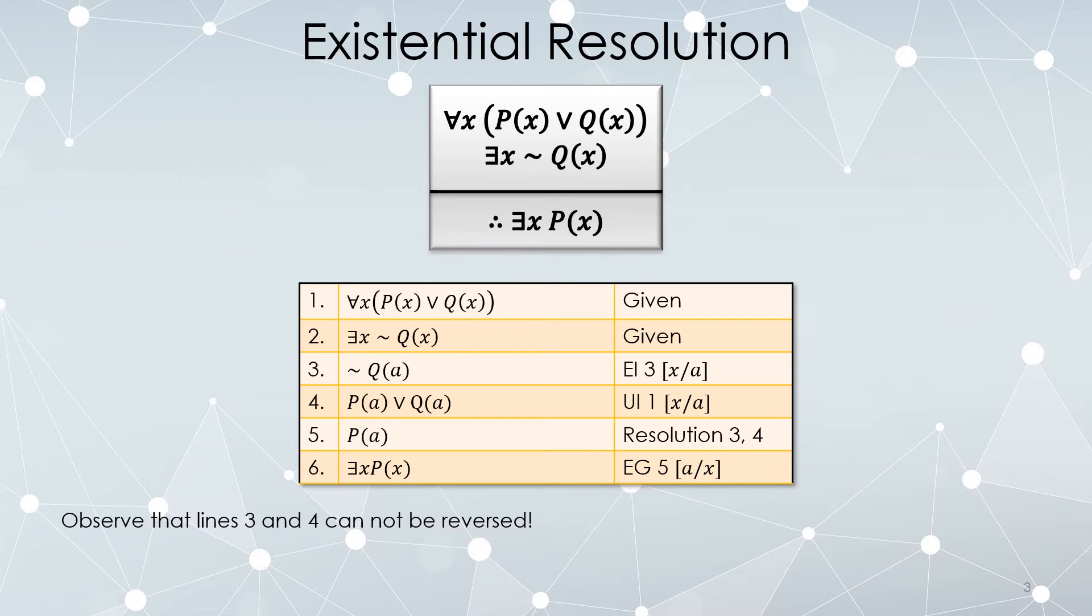So line 3 and line 4 have to occur in this order. They cannot be reversed. As I've said in a previous video, in general, whatever instantiations you expect to do, do the existential ones first because they have restrictions on them. Then when you do the universal instantiations later, they are unrestricted and you don't have to be so concerned.